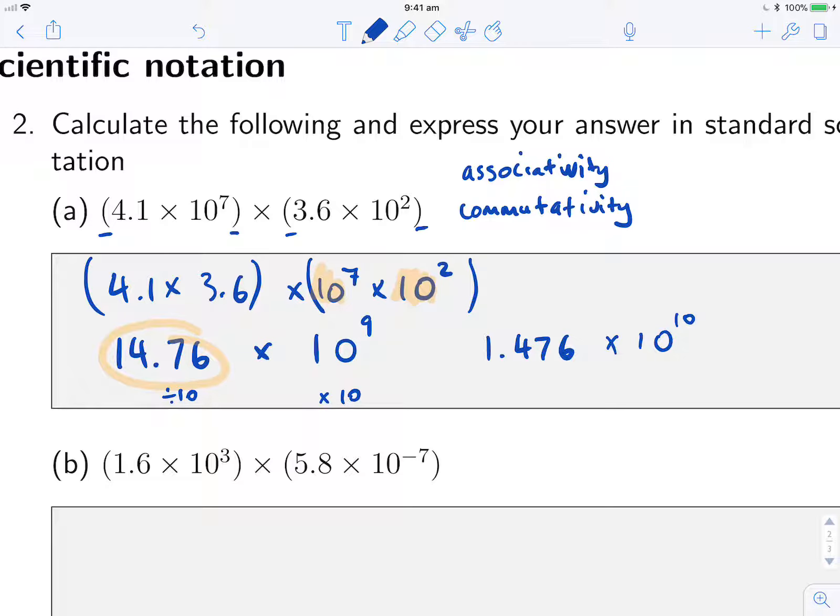Now again, I can think of that in terms of my commutativity and associativity. Rather than thinking of this as dividing by 10, I'll call it multiplying by a tenth, because then I could have had 14.76 times a tenth times 10 to the 9 times 10, and rearranging these, again because of my associativity, I could put this one out here. And this last part, bracketing that together, just equals 1. So we can see that since I've applied both of those, they kind of cancel each other out, and it's just the same as the number that I had started with.